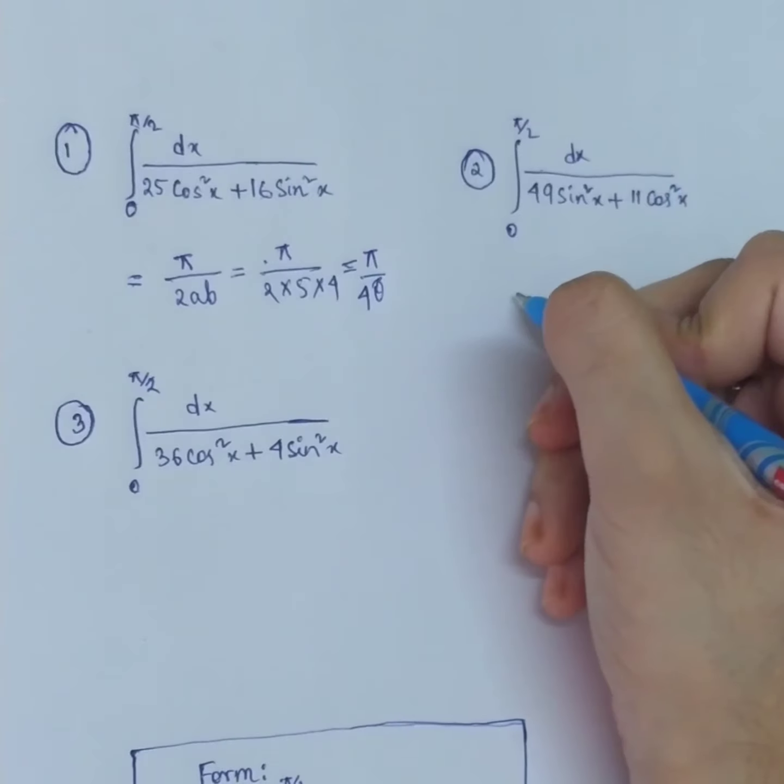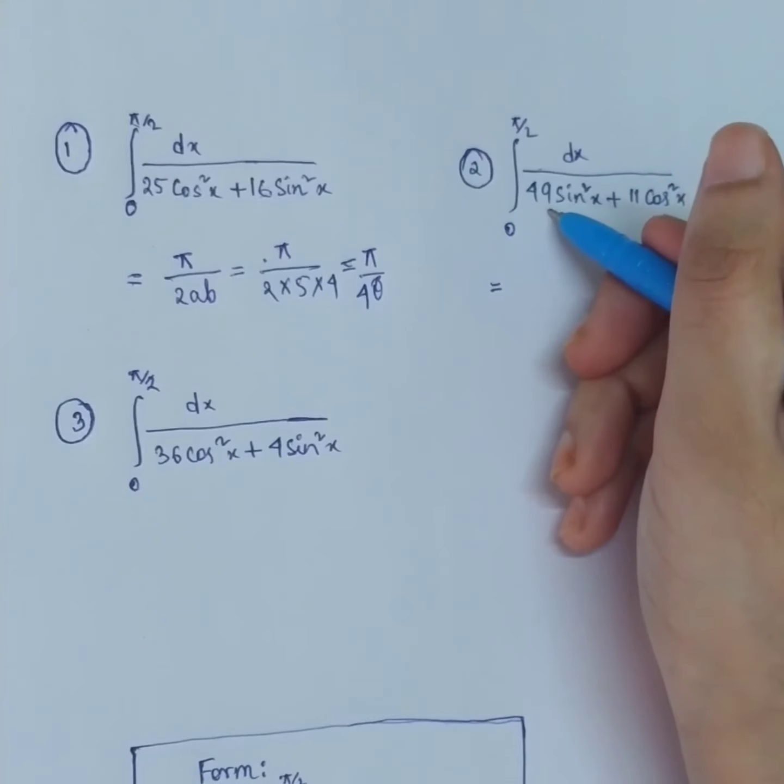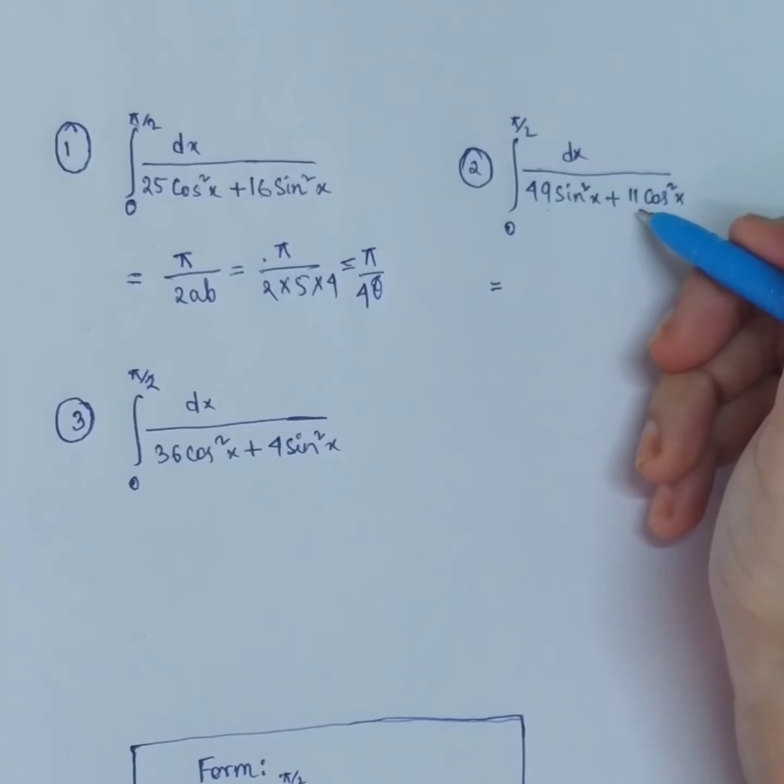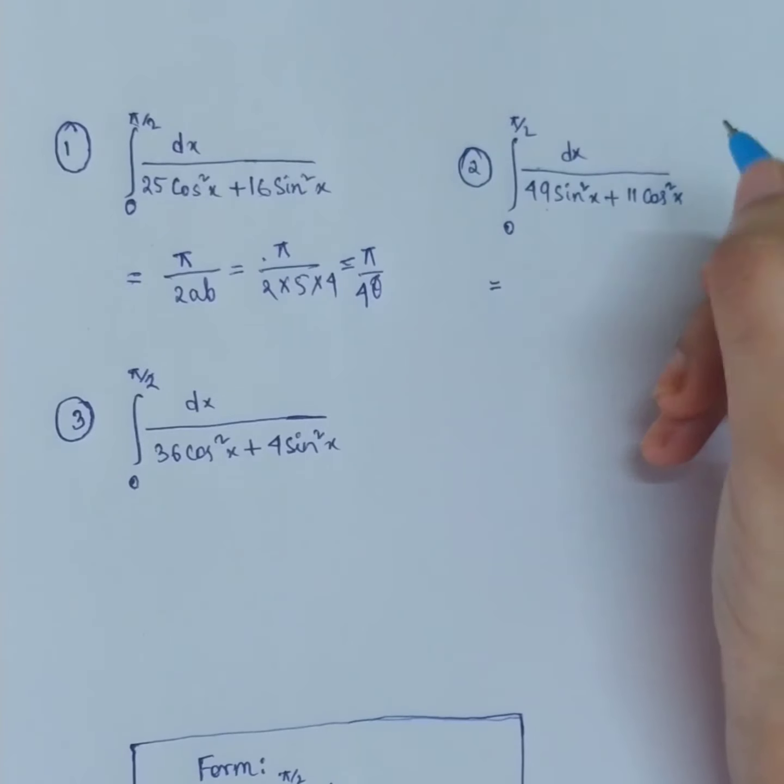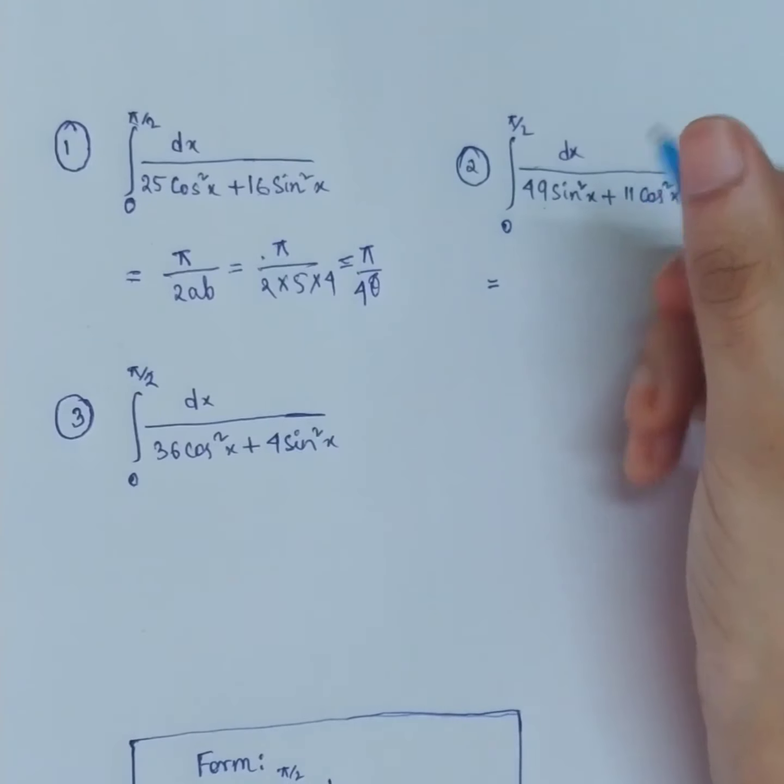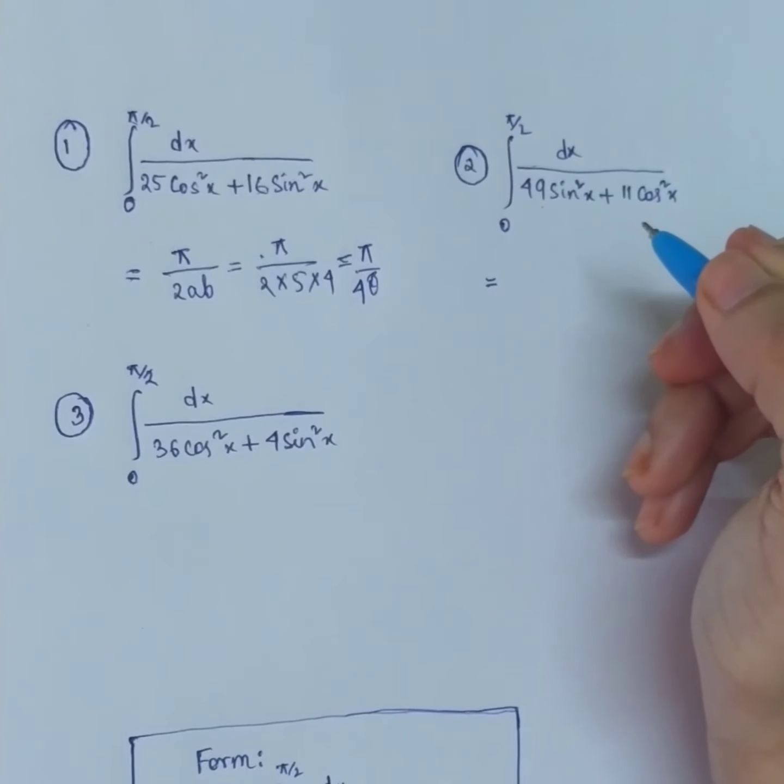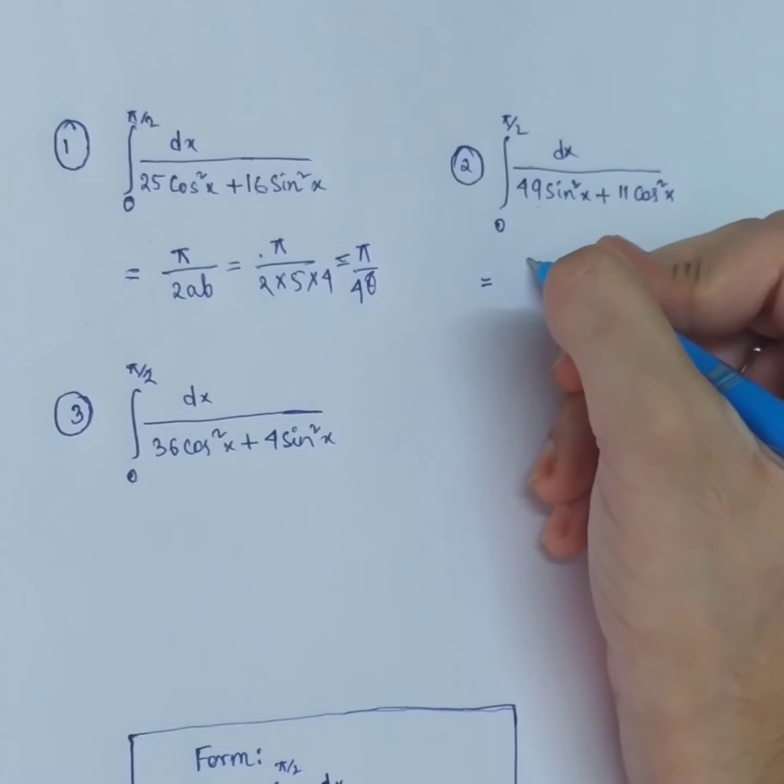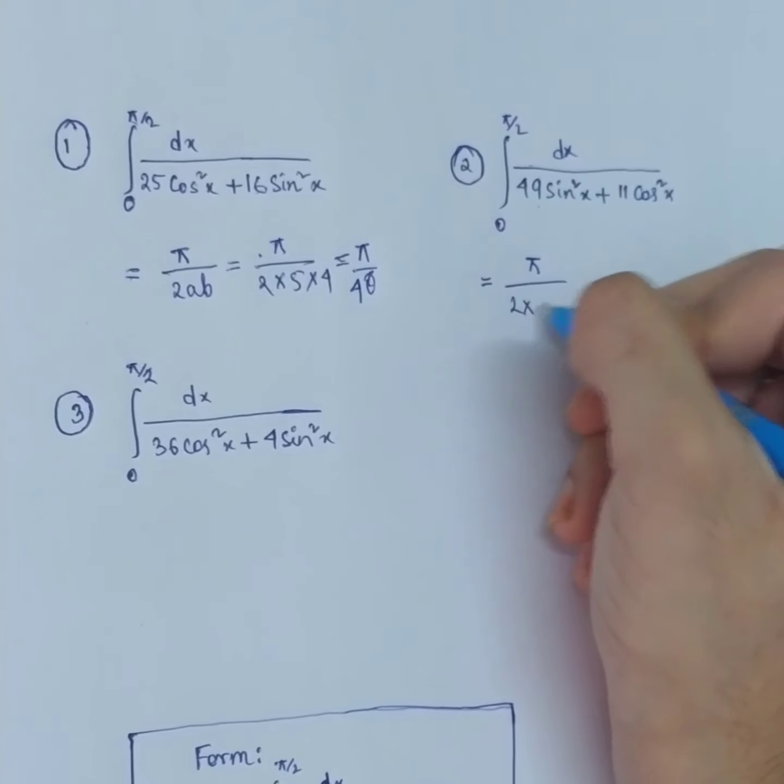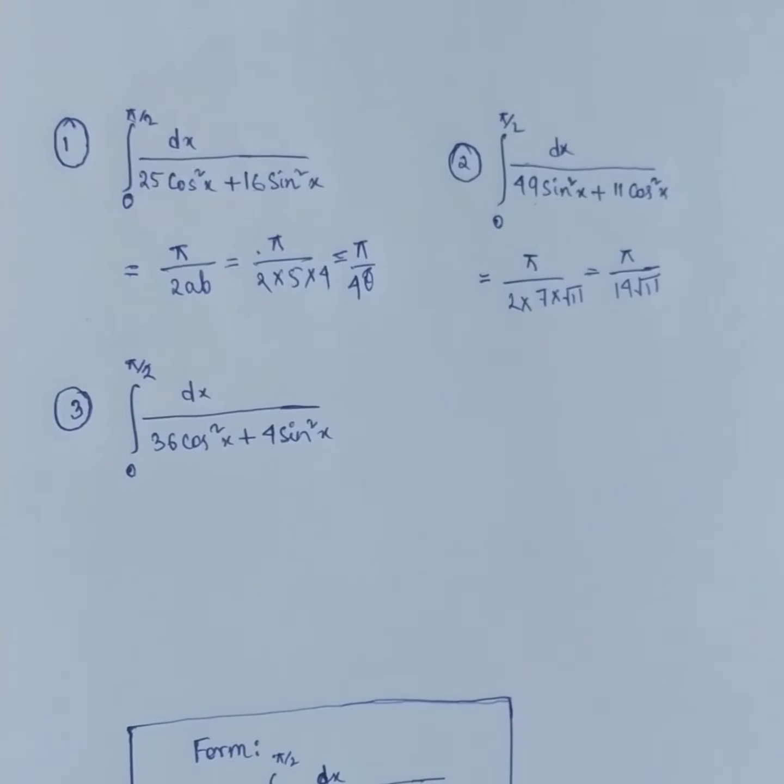Now coming to our next question. Here, you have a² = 49 and b² = 11. Whenever the perfect square is not there, then a is 7 and b is √11. Yes, √11. So our answer would be π/(2×7×√11). So this will be π/(14√11). How simple, right?